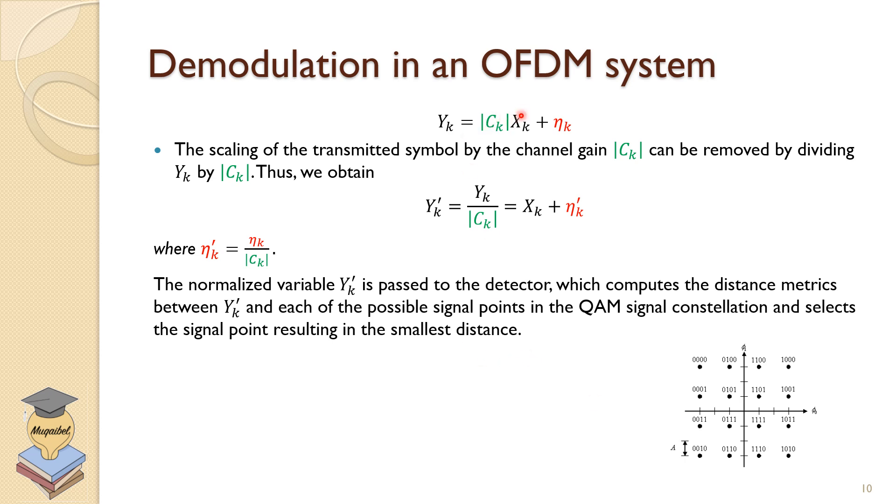So the demodulation process will continue. The scaling of the transmit symbol by the channel gain can be removed by dividing by Y_k. We can do training. We can assume we know the channel state information and we can take care of the C_k by the division. Of course, we get affected noise or changed noise because the noise will be scaled accordingly. So if C is small or large, we could be emphasizing or deemphasizing the noise. The normalized variable Y, which is the one that we make decision on, is passed to the detector, which computes the distance metrics between Y and each of the possible points on the constellation diagram and selects the signal point representing the smallest possible distance. So if we had a vector before the scaling, this could be small. We adjust with scaling so we get the other vector and then we do the demodulation to the decoder, the other vector after we adjust for the channel, after we equalize the channel.